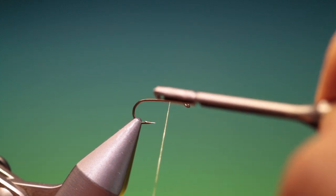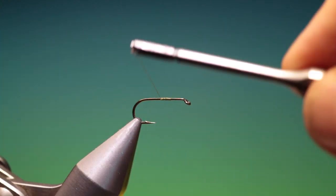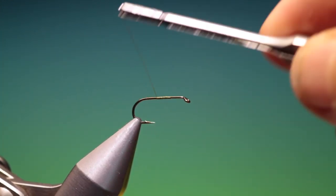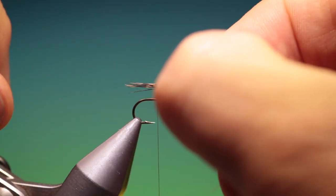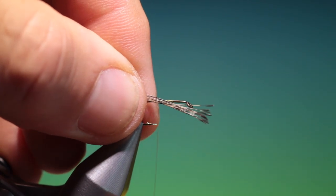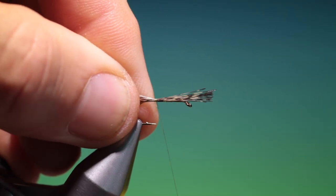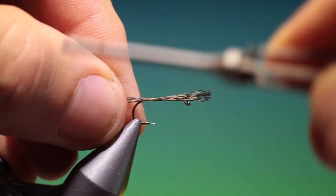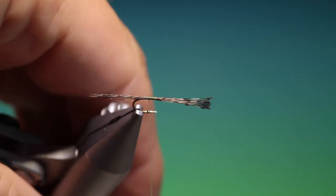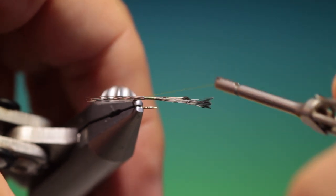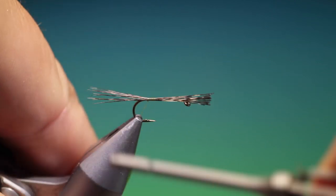So we'll just attach our tying thread and go a ways back and we need a small bunch of Coq de Lion fibers, about the same length as the hook shank. Tie these in, we don't want to go all the way back. Pull a little bit of thread under there just to spread the tail a little.